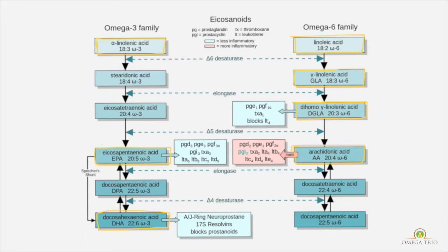DGLA is not really found in many foods, and neither is GLA — which is why we have supplements. They come in the form of borage seed oil and evening primrose oil. This is the reason why people take supplements with high GLA content: because GLA gets converted into DGLA, which then acts as an ingredient for the anti-inflammatory pathways.